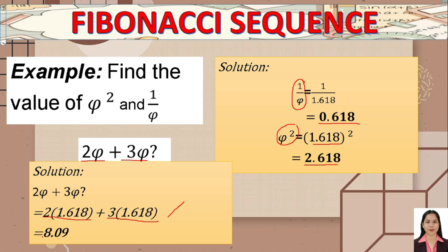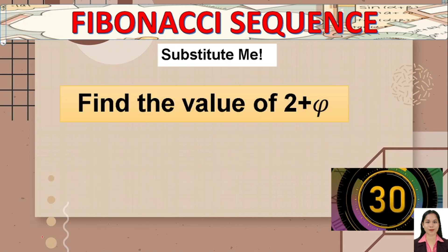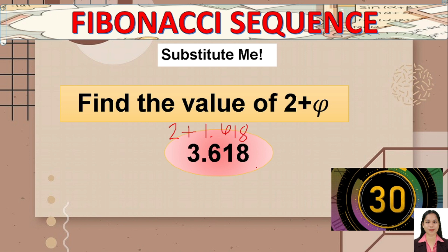This is how we solve for expressions involving the golden ratio — simply substitute the golden ratio value of 1.618 wherever phi appears. For example, 2 plus phi equals 2 plus 1.618, which gives 3.618.